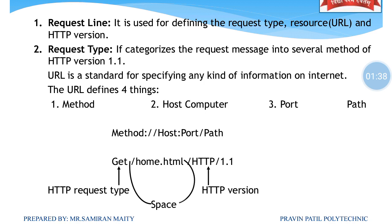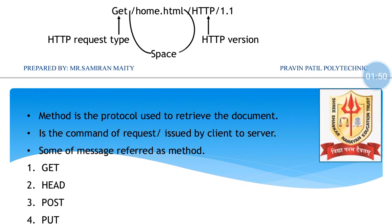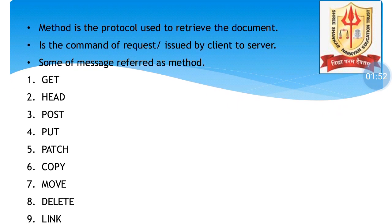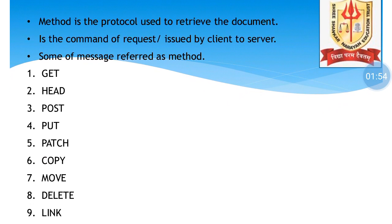The URL defines four things: method, host computer, port, and path. The protocol is used to retrieve the document — it is the command of the request issued by client to server. Some of the messages referred to as methods include GET, PUT, COPY, DELETE, and so on.